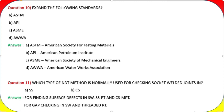Question 11: Which type of NDT method is normally used for checking socket welded joints? Answer: For finding surface defects in SW joints — PT (liquid penetrant testing) and MT (magnetic particle testing). For gap checking in SW and threaded connections — RT (radiographic testing).